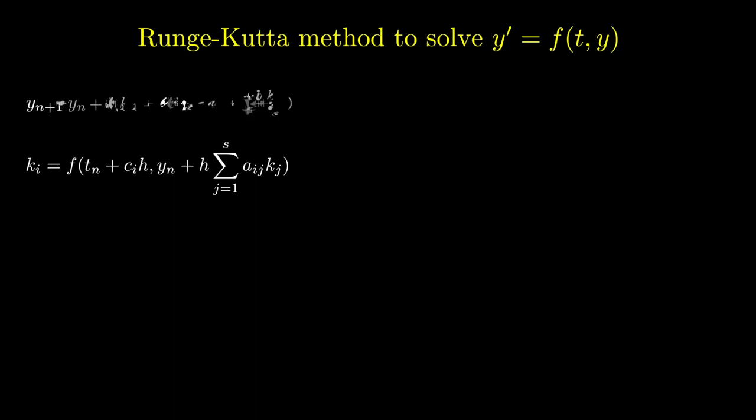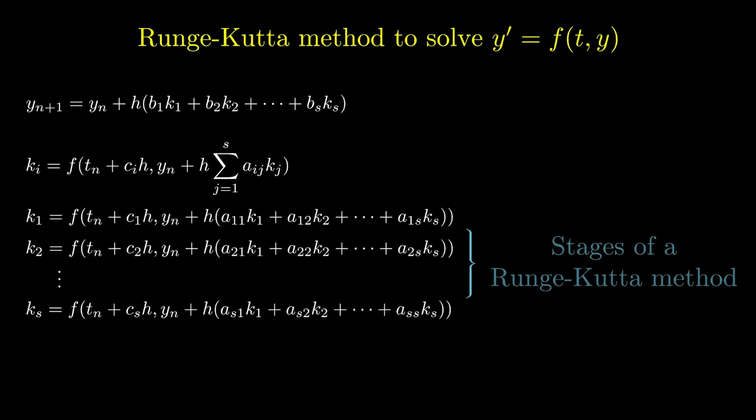We can expand on the expressions for y_{n+1} and k_i by evaluating the summations. So here we have b_1 times k_1 plus b_2 times k_2, etc., up to b_s times k_s. The values of k_1, k_2, etc. are known as the stages of the Runge-Kutta method. Here we have a method with s stages. In practice, s will depend upon the accuracy and type of method used.